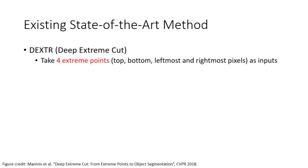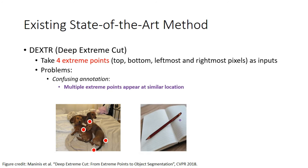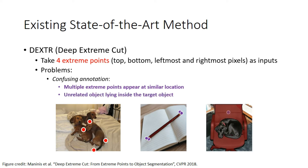Recently, DXTR, which takes four extreme points — top, bottom, leftmost, and rightmost pixels — as input, has shown remarkable performance for interactive segmentation tasks. However, this clicking paradigm also brings some issues. For example, it could be confusing when multiple extreme points appear at a similar spatial location, or when there is an unrelated object lying inside the target object.